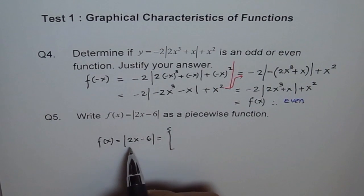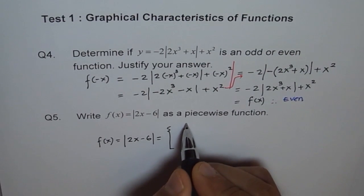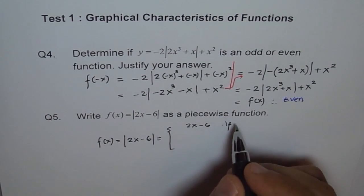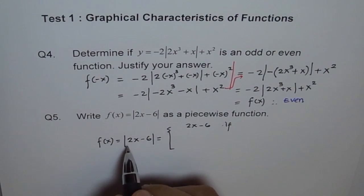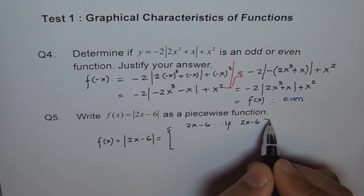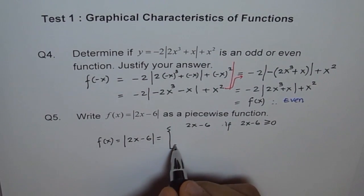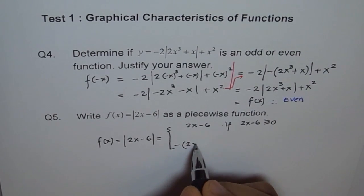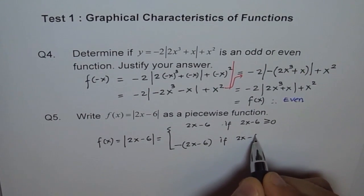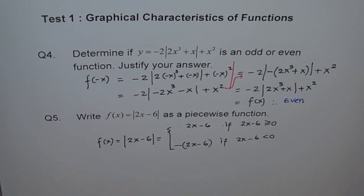this is equal to 2x minus 6, the positive value, if this value is positive. So we say, this is equal to 2x minus 6, if inside value, inside value is 2x minus 6, right? If 2x minus 6 is greater than or equal to 0, correct? And this is equal to negative of 2x minus 6, if 2x minus 6 is less than 0, correct? That is how the function is defined.